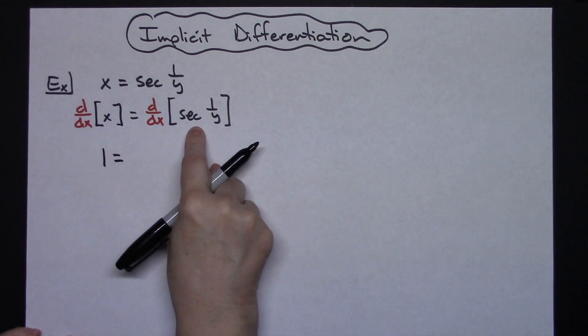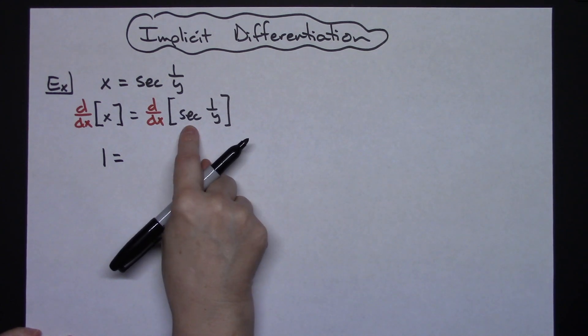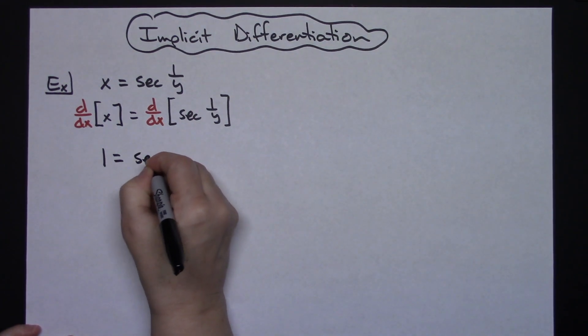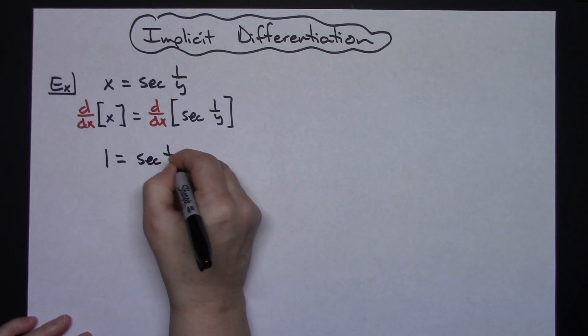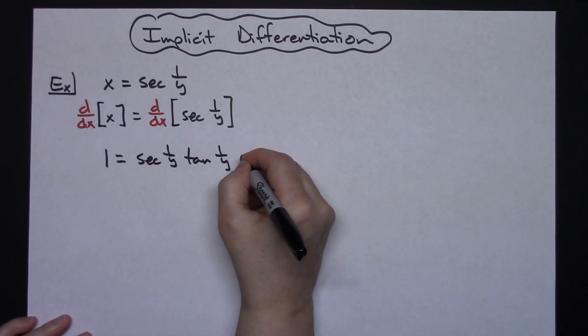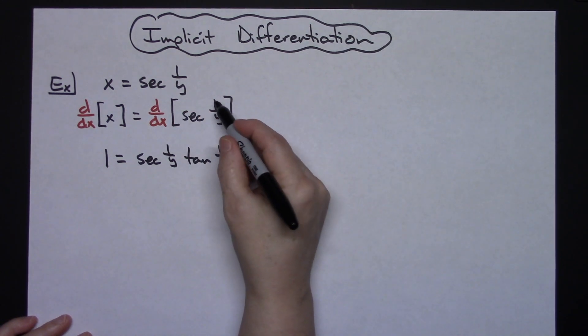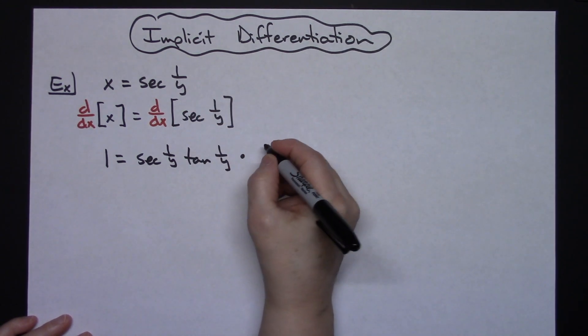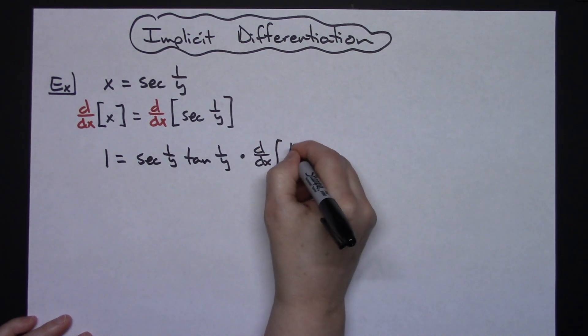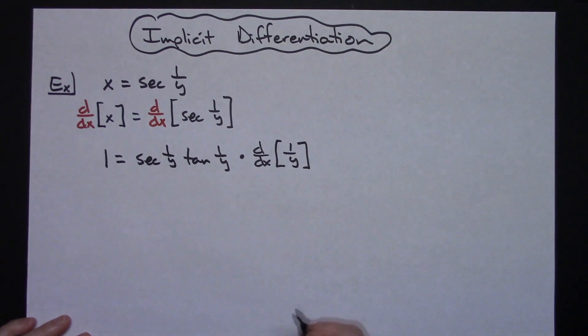Over here I do have a y term so this is where my chain rule is going to come into play. I'm going to take the derivative of the outside function which is secant right there so derivative there would be secant tangent so I will have a secant 1 over y and a tangent 1 over y. And then because I've got the chain rule in here I'm going to have the derivative then of the inside function and I am going to go ahead and show that with that d/dx notation right there.